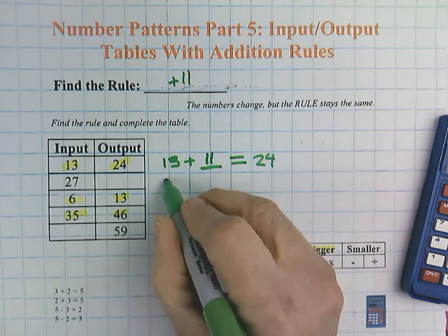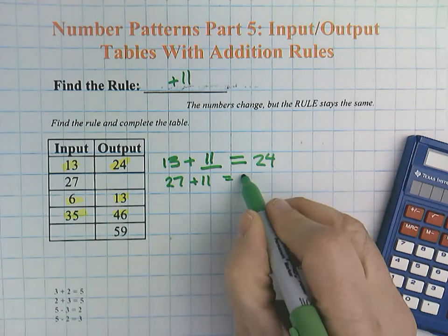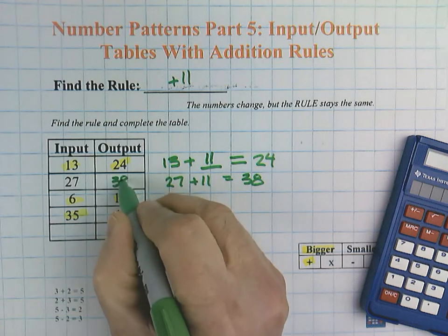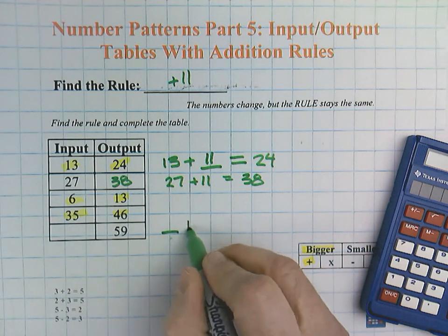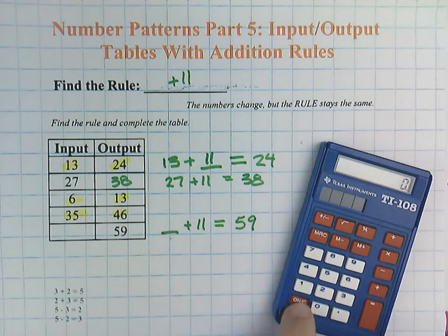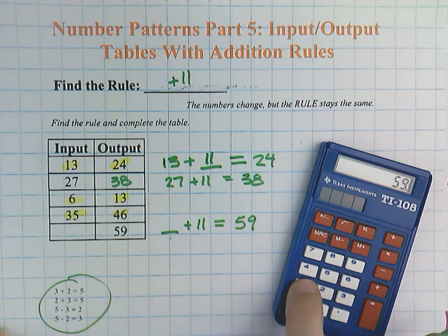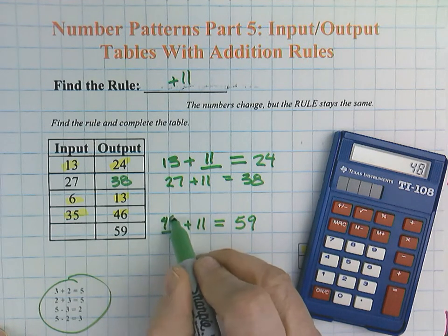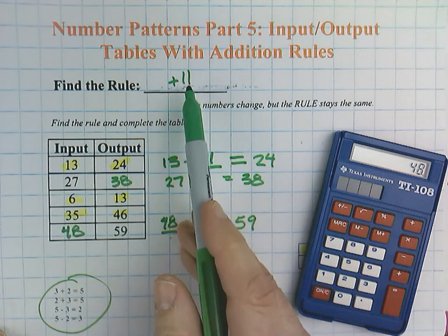Input 27 plus 11 equals 38. Then at the bottom, we use the same rule: blank plus 11 equals 59. Using fact families, I'm going to subtract: 59 minus 11 equals 48. So our last missing number is 48. We've completed our input-output table using a rule of plus 11.